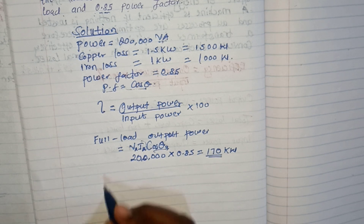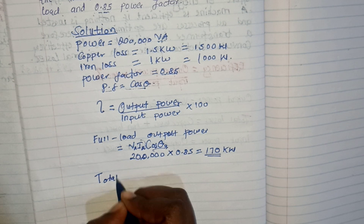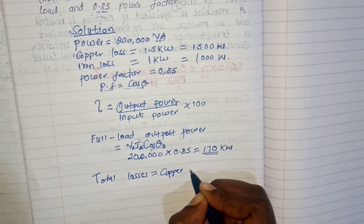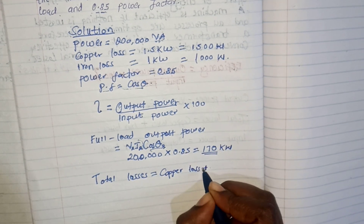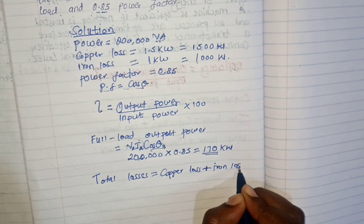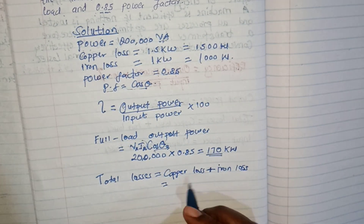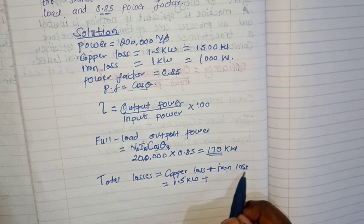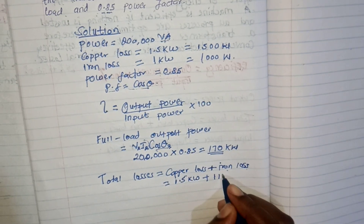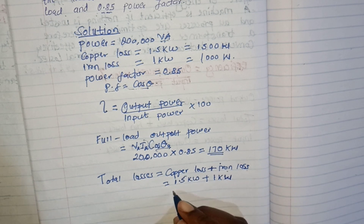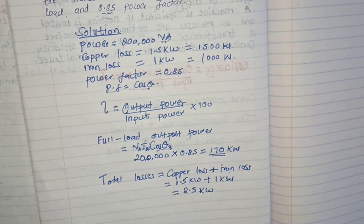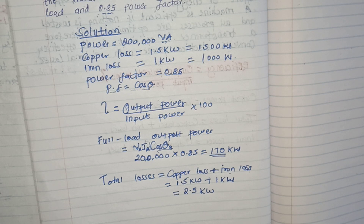Next, we calculate the total losses. Since we are given the copper loss and the iron loss: total losses = copper losses + iron losses = 1,500 W + 1,000 W = 2,500 W, which equals 2.5 kilowatts.